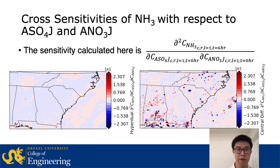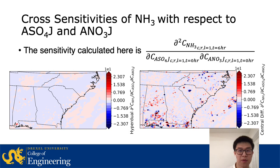We can also calculate cross-sensitivities. In this case, we have the cross-sensitivity of ammonia in the first layer only, with respect to both nitrate and sulfate. The central difference sensitivity is much more noisy compared with the hyperdual sensitivities, further demonstrating the advantage of the hyperdual approach.